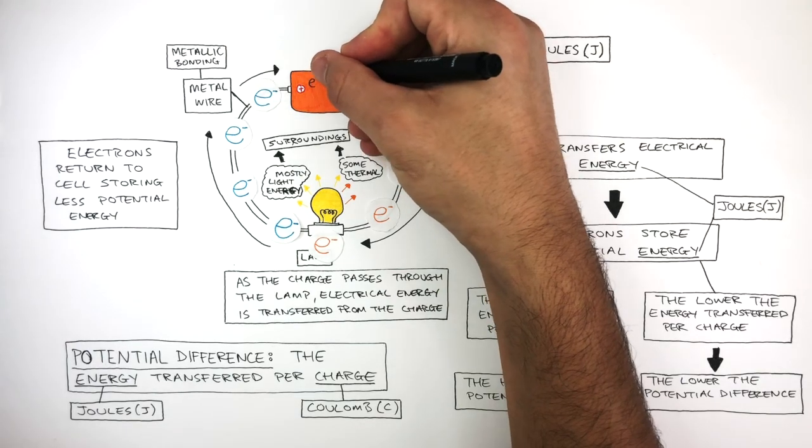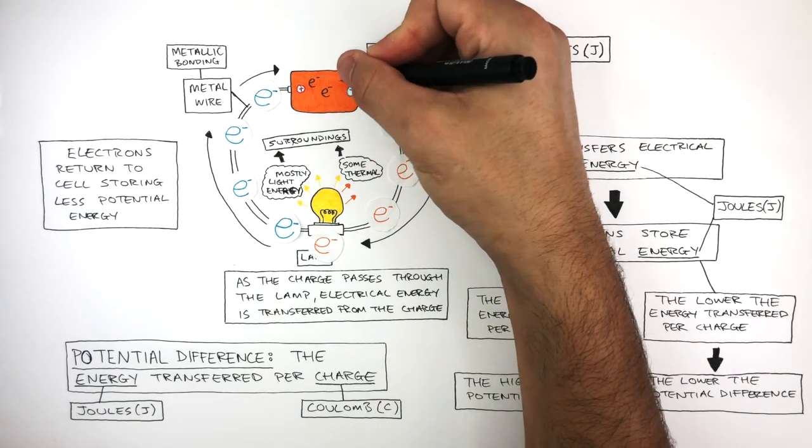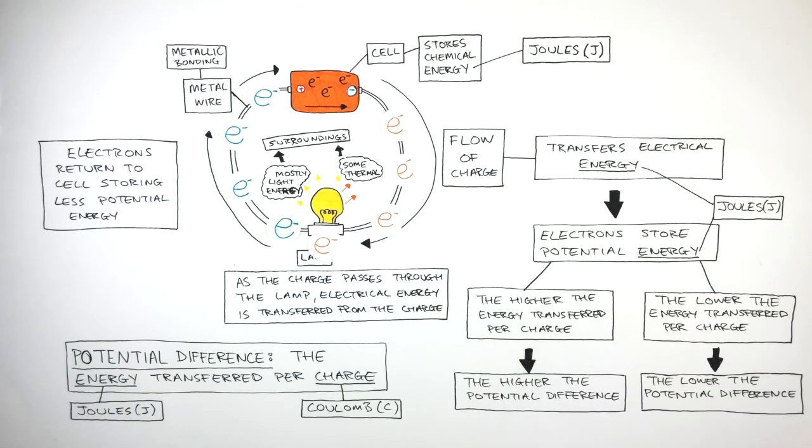Chemical energy in the cell is then transferred back to the electrons where they flow out of the negative terminal for the whole cycle to begin again.